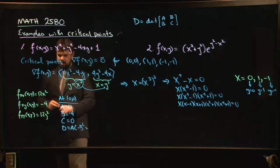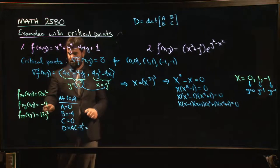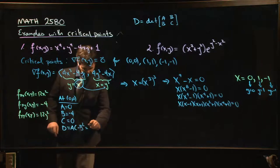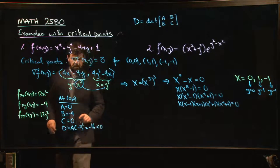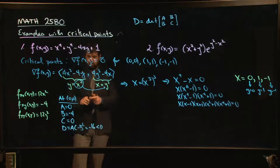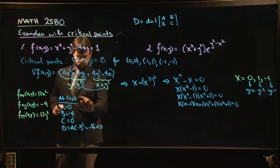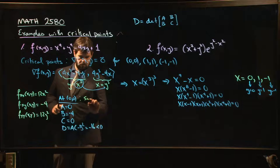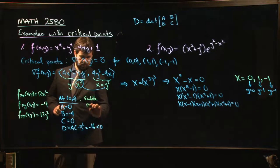So d is what? -4² is 16, zero minus 16 - 16 minus 16 is negative. So we have a saddle point.